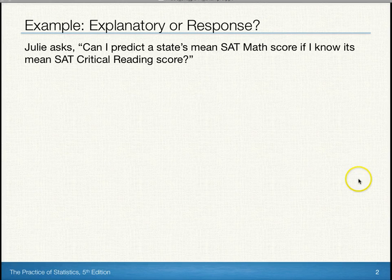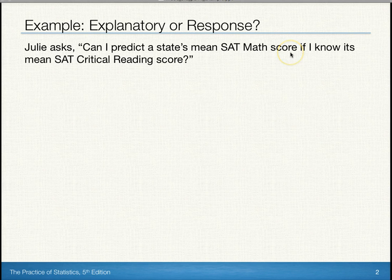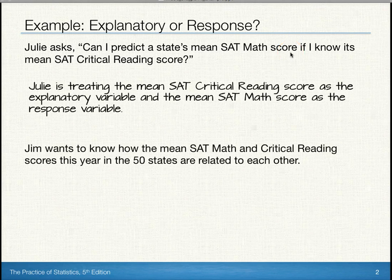In this example, Julie is trying to use the SAT critical reading score to help figure out what the SAT math score is. So Julie is treating the mean SAT critical reading score as the explanatory variable, and the mean SAT math score as the response.